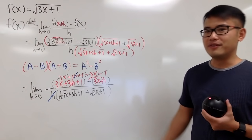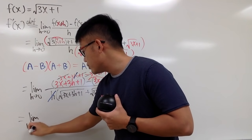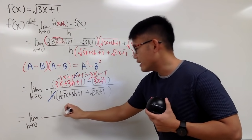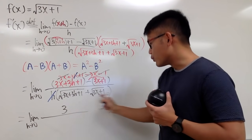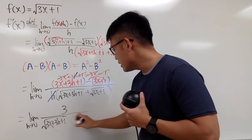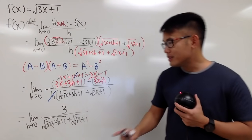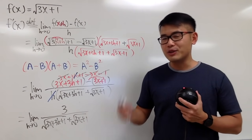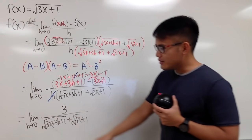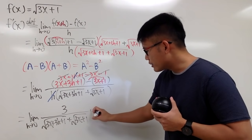So this is pretty much the simplification. In the end, this is nothing but the limit as h goes to 0. On the top, you just have 3 left, and the h is also gone. So we write: 3 over square root of 3x plus 3h plus 1 plus square root of 3x plus 1. Notice when they cancel out, you cancel the 0 over 0 situation, which is wonderful. Now you can just plug in 0 for h.